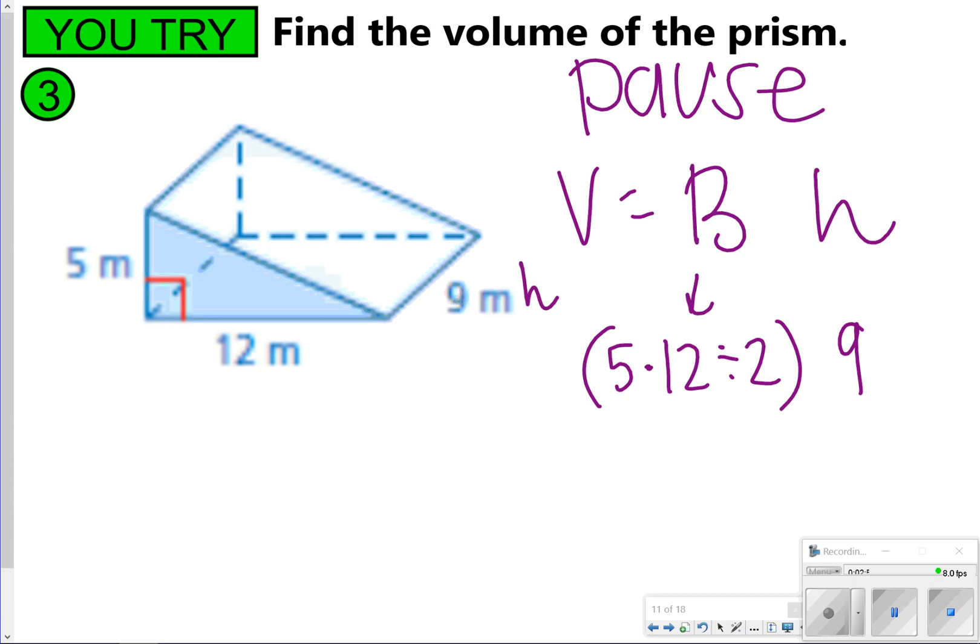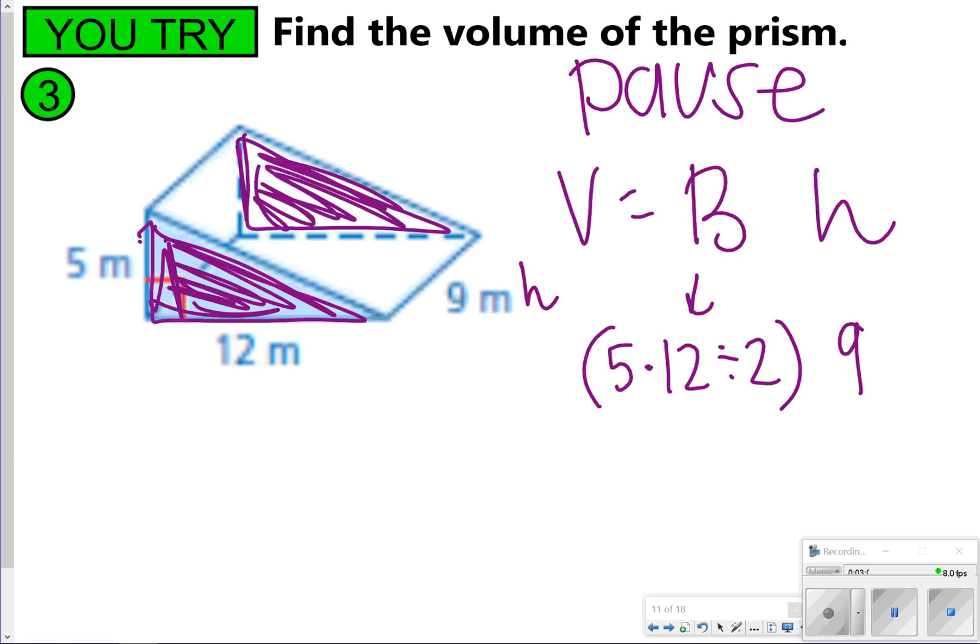The reason why 9 and 12 are not the base is because, remember, for prisms, your bases have to be directly across from one another, almost parallel shapes, and these triangles are the only ones that do that. So that's why the base is the triangle. 5 times 12 divided by 2 is 30, and 30 times 9 is 270, so your answer should be 270 meters cubed.